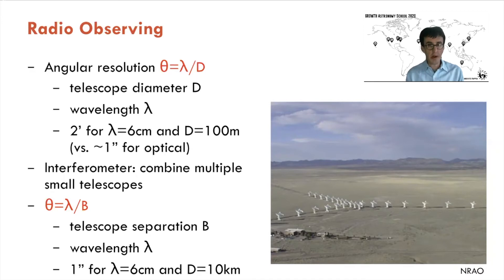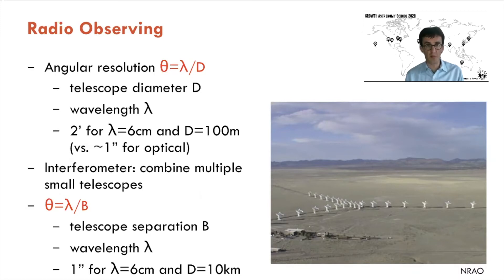In radio, however, it's relatively easy to build an interferometer — combining multiple small telescopes — so angular resolution is set not by an individual telescope size, but by B, the telescope separation or baseline. With something like the Very Large Array, we can easily have telescopes 10 kilometers apart and achieve the same one arc second resolution. That's really important.